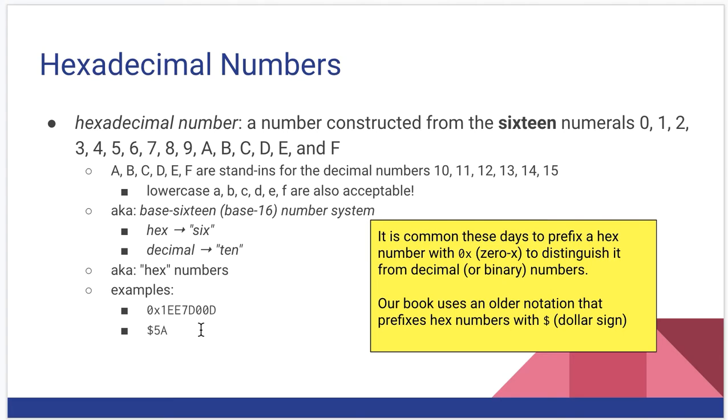Hexadecimal numbers, hex meaning 6, dec meaning 10, is a number system constructed from 16 numerals. I know that sounds kind of arbitrary, but we'll see in a minute why 16 works out nicely. And those numerals are 0, 1, 2, 3, 4, 5, 6, 7, 8, and 9.